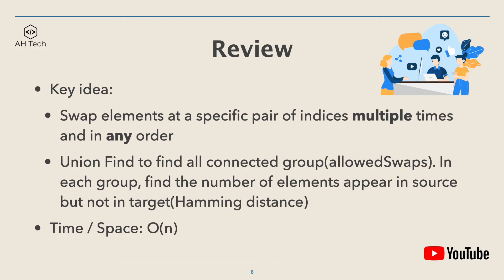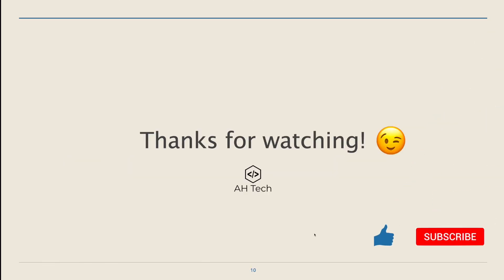In each group we find the number of elements that appear in the source array but not in the target array, and this gives us the minimum Hamming distance. The time and space complexity of this approach are both linear — we only iterate through the array once, and we need extra space to build the Union-Find data structure. That's all for today. Thanks for watching! If you like this video please give it a like and subscribe to my channel, and I'll see you in the next one.